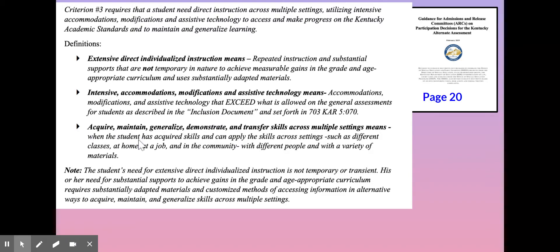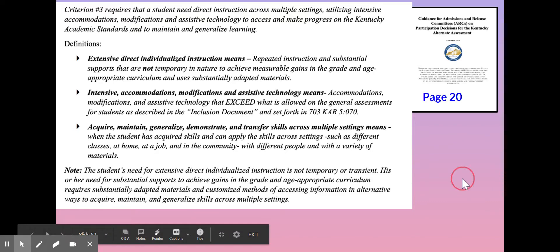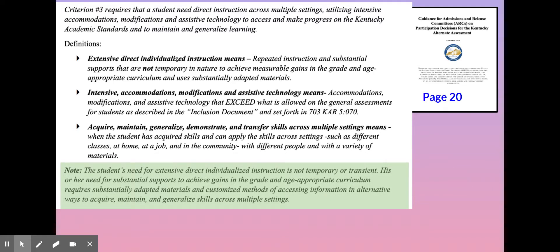When looking at the term 'acquire, maintain, generalize, demonstrate, and transfer skills across multiple settings,' we're talking about when the student has acquired skills and can apply them across settings such as different classes, at home, at a job, and in the community — with different people and a variety of materials. There is an important note here: the student's needs for extensive direct individualized instruction are not transient or temporary. Their needs for substantial supports to achieve gains in the grade and age-appropriate curriculum require extensive supports to acquire, maintain, and generalize across settings.